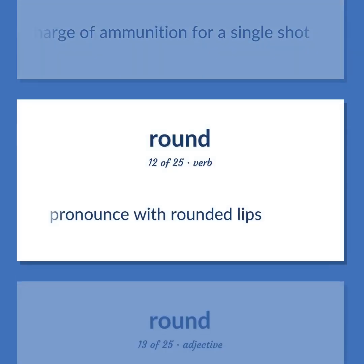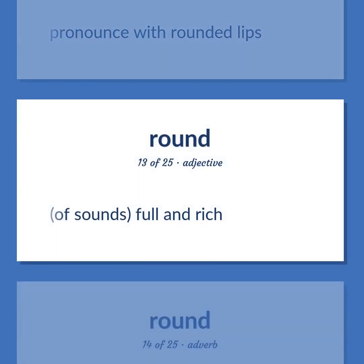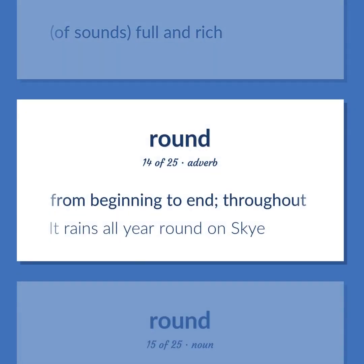To pronounce with rounded lips. Of sounds: full and rich. From beginning to end; throughout. Example: It rains all year round on sky.